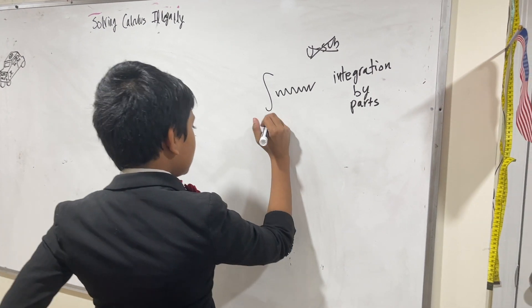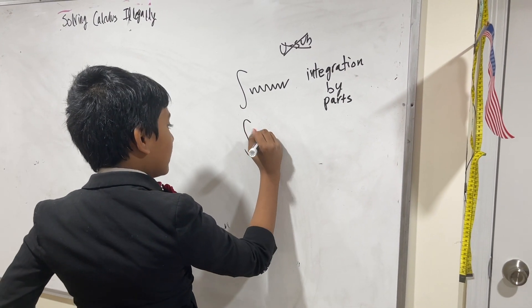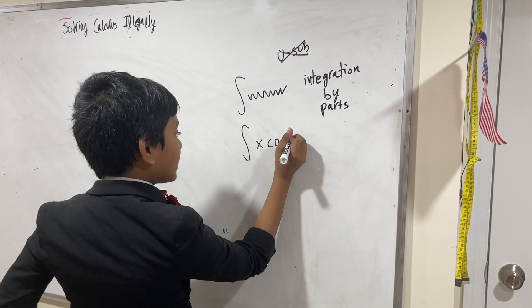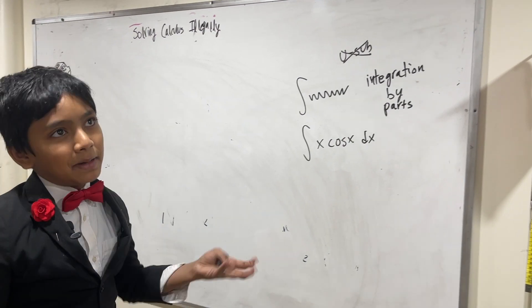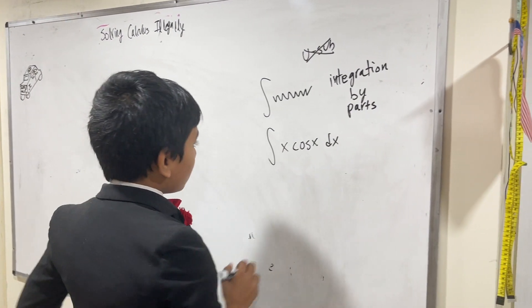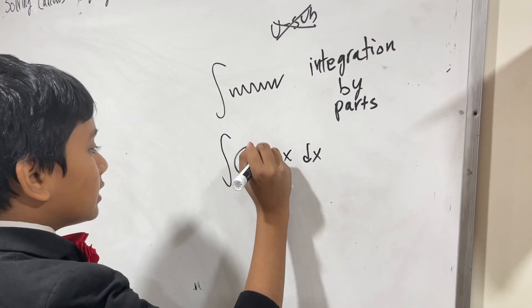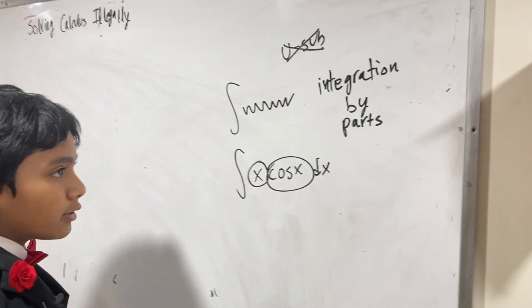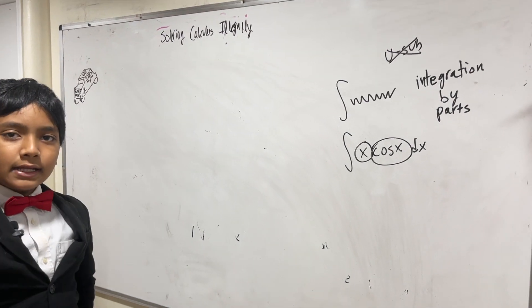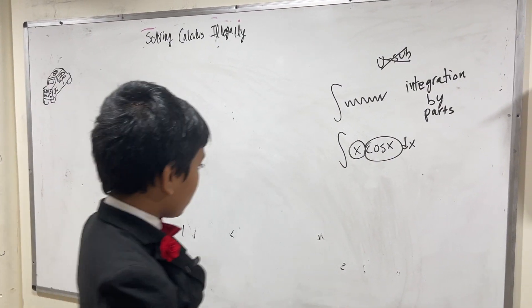Well, let's take for example x cosine x dx. Now as you see, we have two little sub parts here. That's what you're going to see in most questions that require integration by parts.